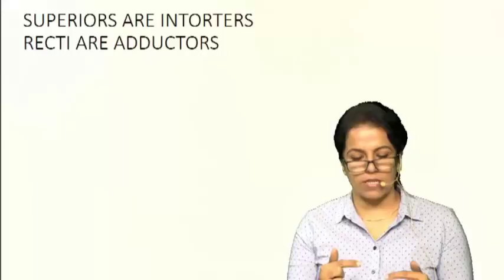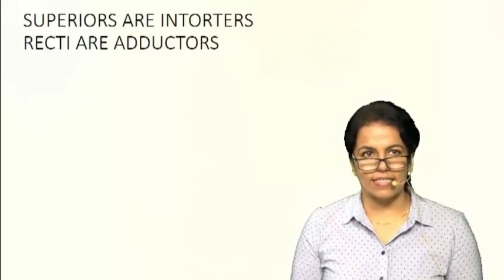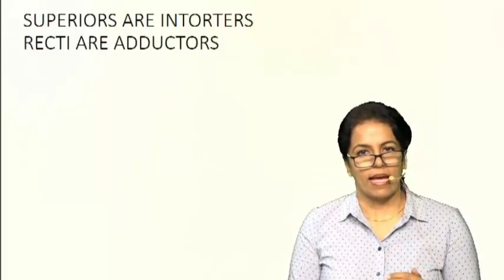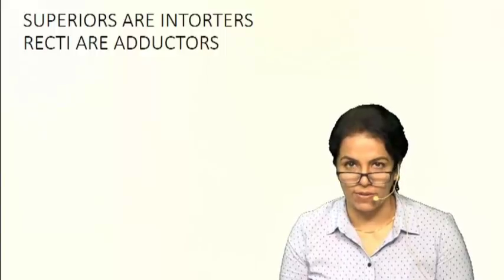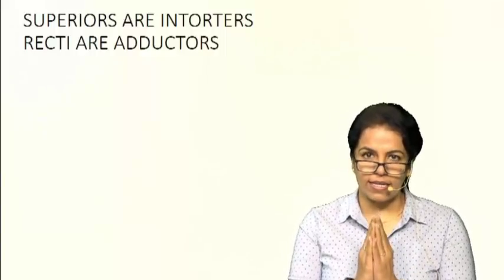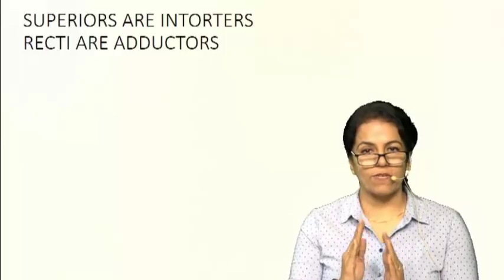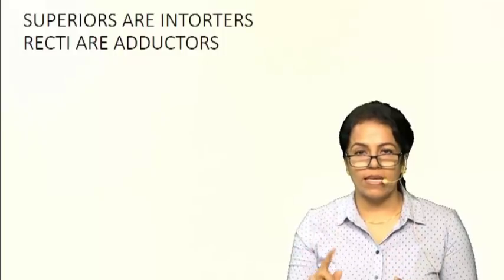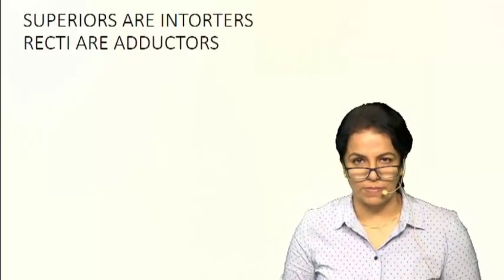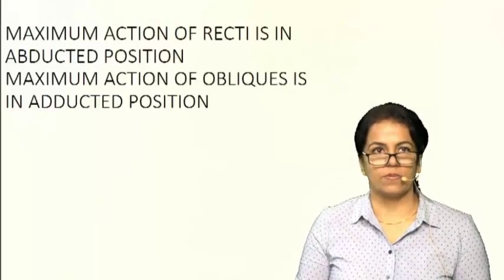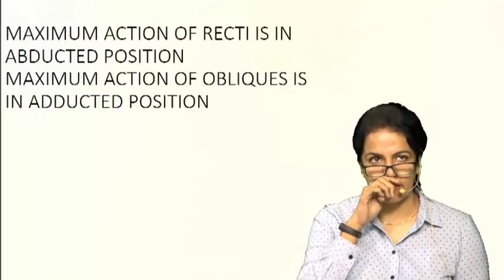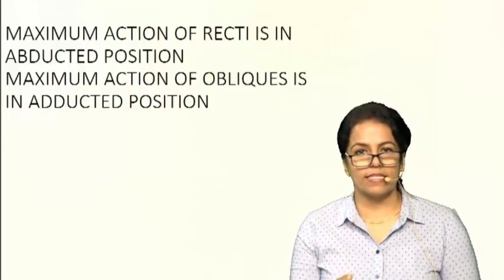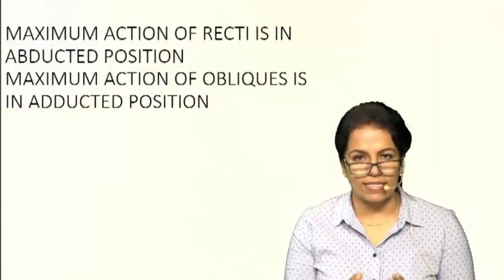Another very important thing to revise here is that whenever we talk about the action of recti — we are talking about vertical muscles — the maximum action of recti occurs in the abducted position, and the maximum action of obliques is always in the adducted position of the eye. So: maximum action of recti is in abducted position, and for obliques it is in adducted position.